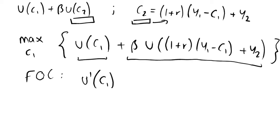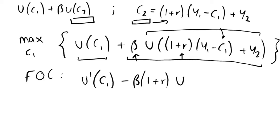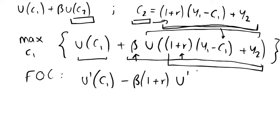For the second term, taking the derivative with respect to c1 brings out a factor of minus (1 + r), since that multiplies c1. We still have beta, so the term becomes minus beta times (1 + r). We notice that the expression inside the brackets is actually what we defined as c2 above — we've just rearranged it — so for simplicity we write this as u′(c2), substituting c2 back in after taking the derivative.